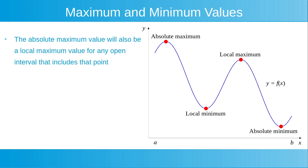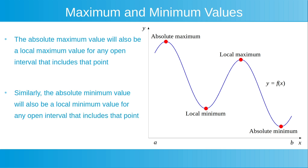The absolute maximum value of the function will also be a local maximum value for any open interval that includes that point. For this open interval, currently shown highlighted with a red line, the absolute maximum value of the function is also a local maximum value. Similarly, the absolute minimum value of the function will also be a local minimum value for any open interval that includes that point. For this open interval, currently shown highlighted with a red line, the absolute minimum value of the function is also a local minimum value.